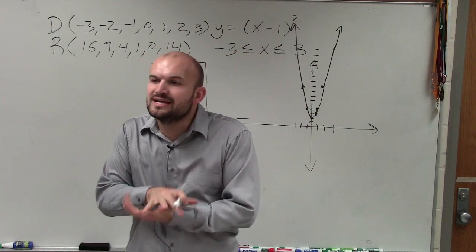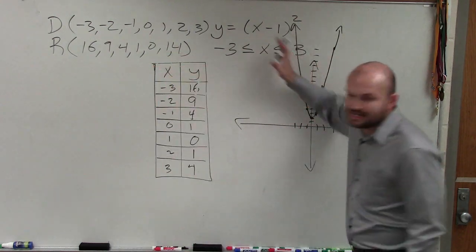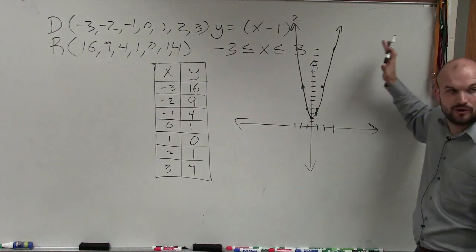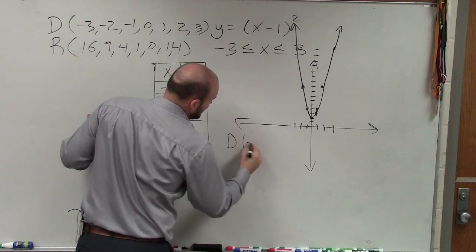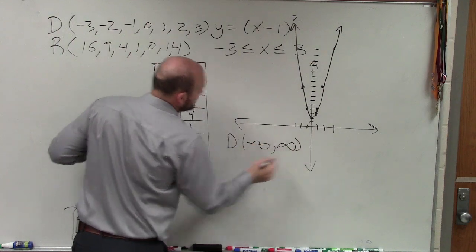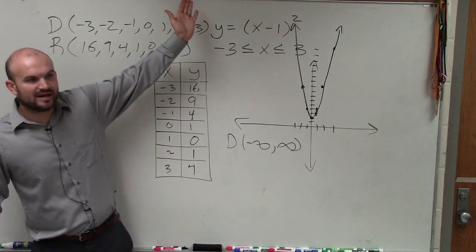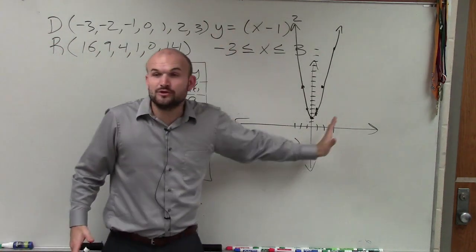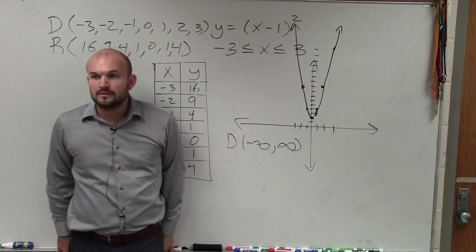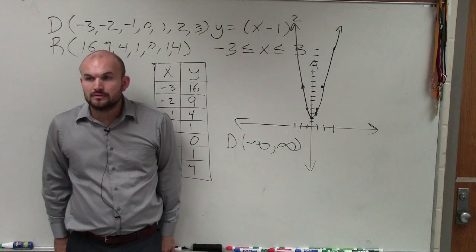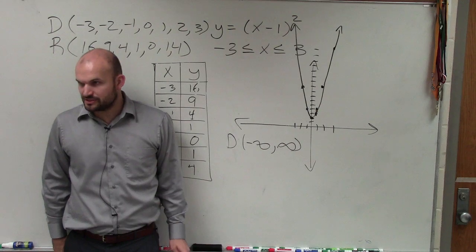There is no restrictions on the domain. This domain is going to continue going left, and it's going to continue going right. So therefore, my domain is from negative infinity to infinity. Because this graph is going to keep on going to the left and continue going to the right. Can you show us an example of one that does have restrictions? Yeah, absolutely. But let's go and look at the range and see why the range has a restriction.